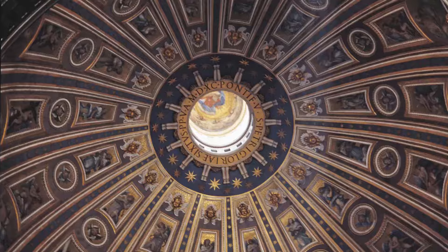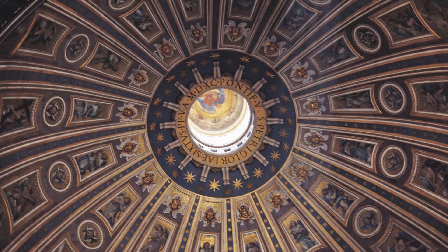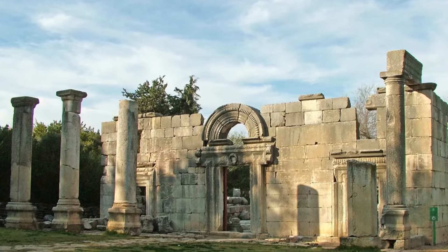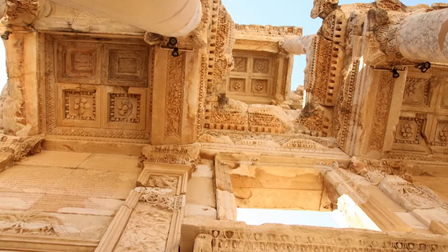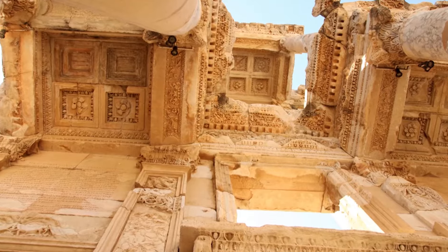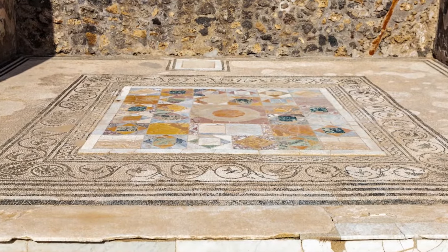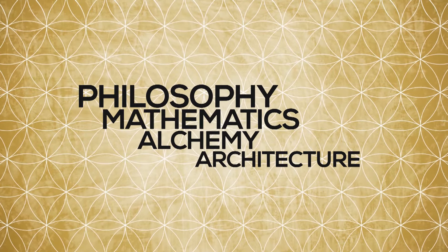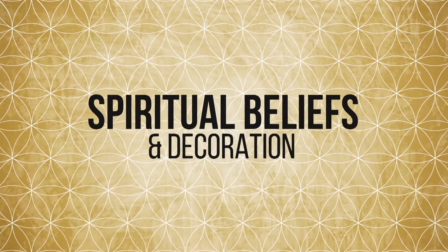Examples of the Flower of Life abound in the architecture of the ancient world. It has been found in ancient synagogues in Israel, in Buddhist temples in India and Japan, in the Forbidden City of China, in the city of Ephesus in Turkey, and on a mosaic floor in Pompeii, Rome. The symbol has played a key role in philosophy, mathematics, alchemy, architecture, spiritual beliefs, and decoration.